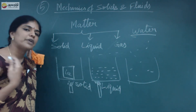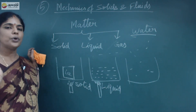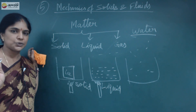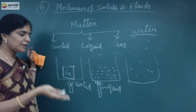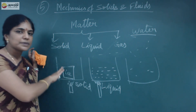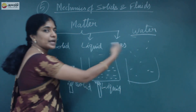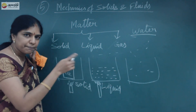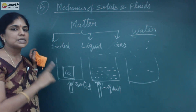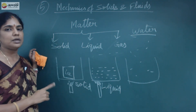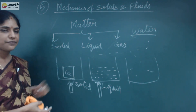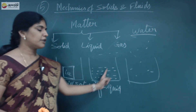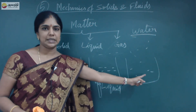In the gaseous state, atoms and molecules are very free to move about and there will be no bond between them. Based on the inter-atomic distance or inter-molecular distance, we classify matter as solid, liquid, and gas.